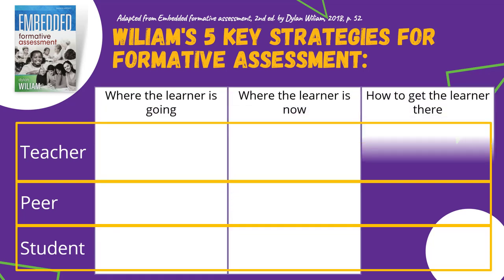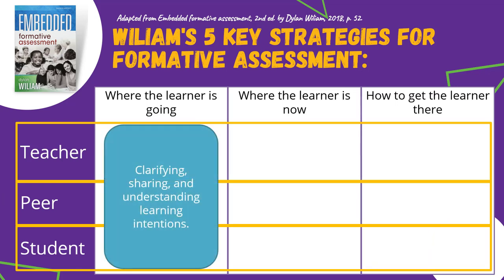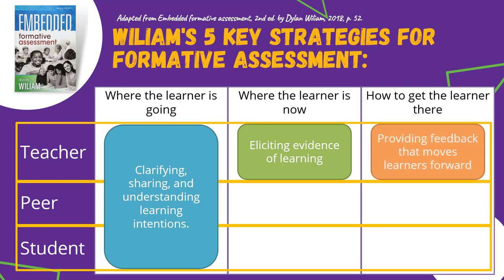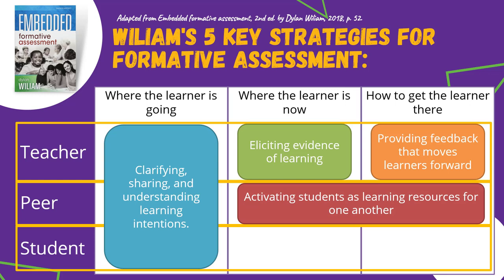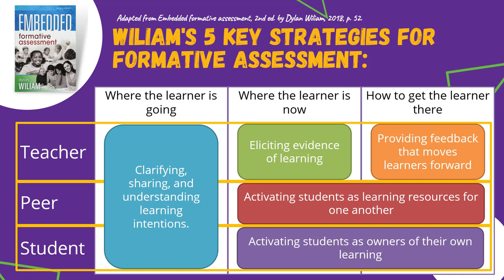Let's look at each strategy in turn. We start by clarifying, sharing, and understanding the learning intentions so that students can monitor their own progress towards the learning goals. We elicit evidence of learning so that we and our students can determine how close they are to that learning goal. We provide feedback that moves learners forward, giving students information on how they can get from where they are to that learning goal. When we activate students as learning resources for one another, we create a shared responsibility for learning, which provides multiple perspectives and teaches students the value of learning through collaboration. And finally, activating students as owners of their own learning is essential to engagement and motivation to learn.